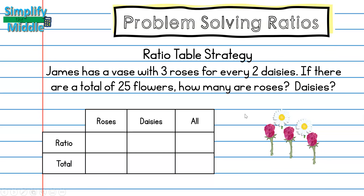Let's fill in our table. If we have three roses and two daisies we can add these together to find how many are in one set — just like with the one folder and three pencils in the last problem. So I can see here that I have five flowers in a set. I have 25 flowers total, so that goes in the 'all' column. All I need to do is ask myself: how do I multiply to get from a total of five to a total of 25?